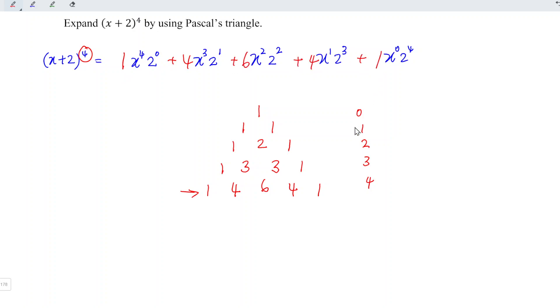We can now evaluate the values of the exponentiation. 2 to the power of 0 is 1, 2 to the power of 1 is 2, 2 to the power of 2 is 4, 2 to the power of 3 is 8, and 2 to the power of 4 is 16.